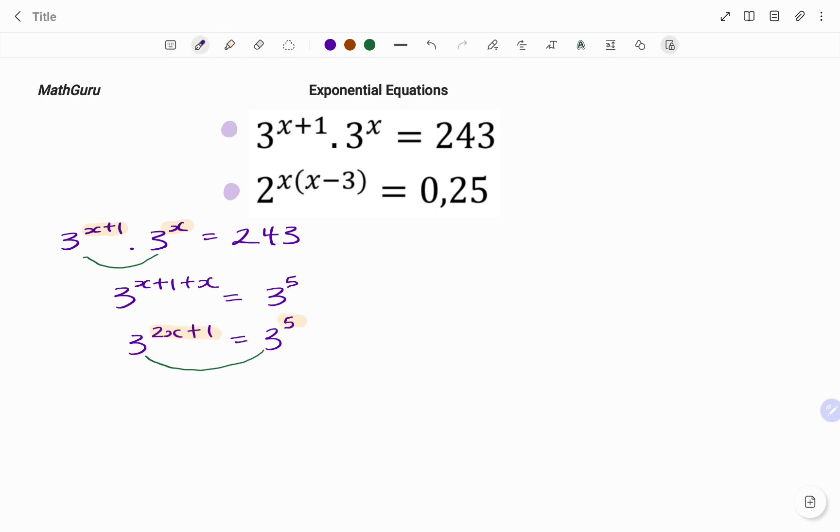So I have 2x plus 1 equals 5, using the balance method. I move my plus 1 to the right hand side, I have 2x equals 5 minus 1, which is 4.